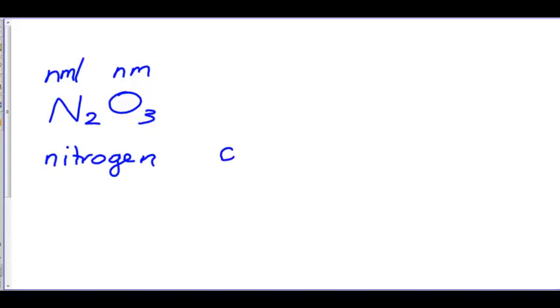We'll try a couple more. Let's say we had N2O3. This is a non-metal, this is a non-metal. So we name our first non-metal nitrogen. We name our second non-metal, drop the ending, and add IDE, nitrogen oxide.